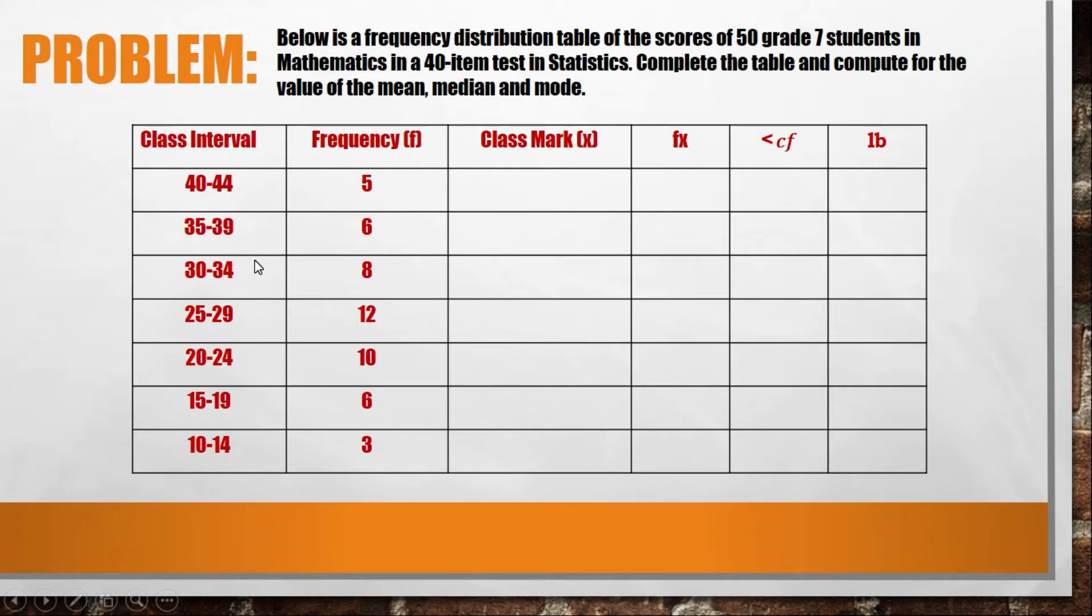It's called grouped data because there's a class interval. With ungrouped data, we just counted because there were few numbers involved. But now we involve greater frequency or greater numbers, so we use grouped data. The first thing we need to identify is the class interval or class size: 40 to 44, 35 to 39, 30 to 34, 25 to 29, 20 to 24, 15 to 19, 10 to 14. We will identify the class interval which is 5.